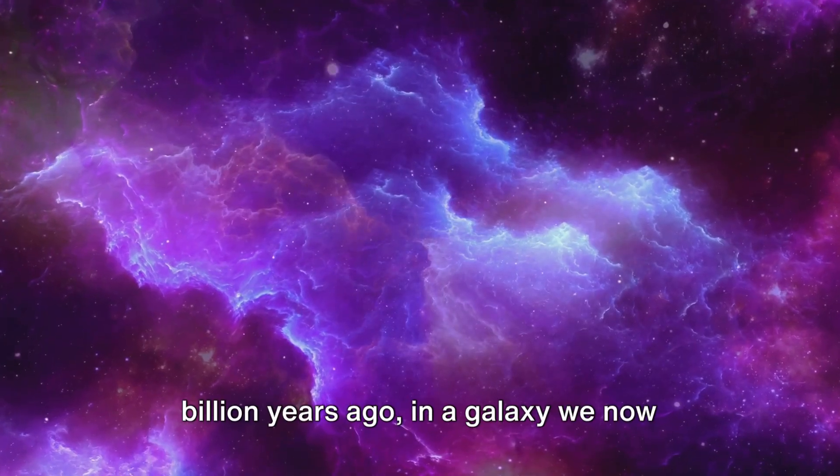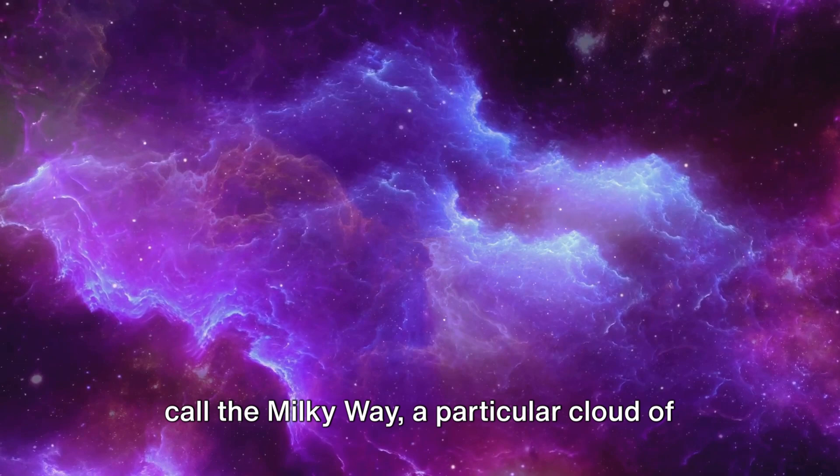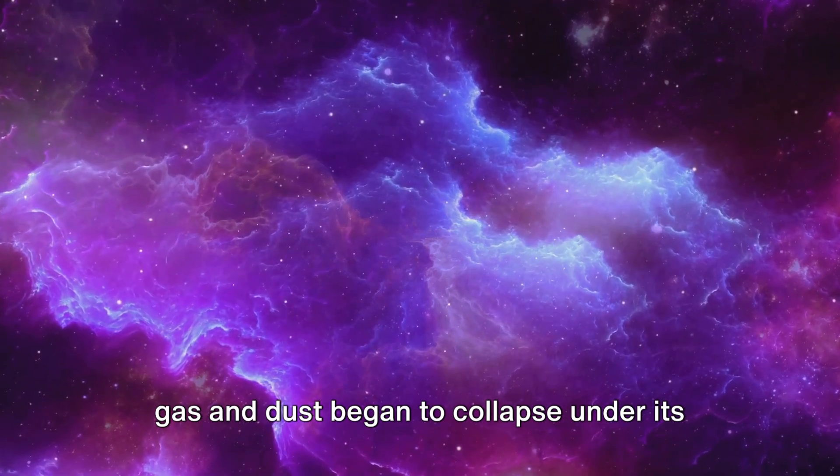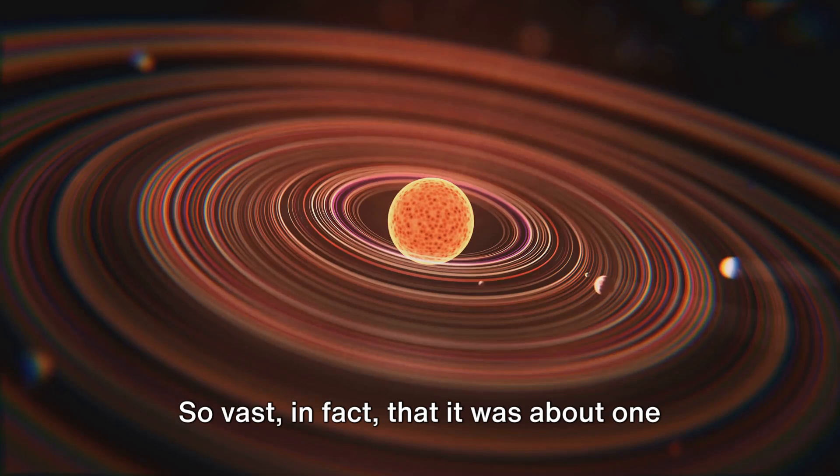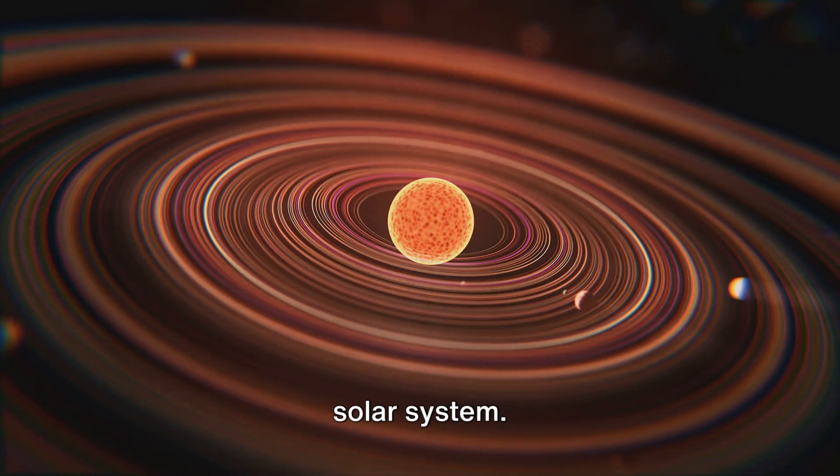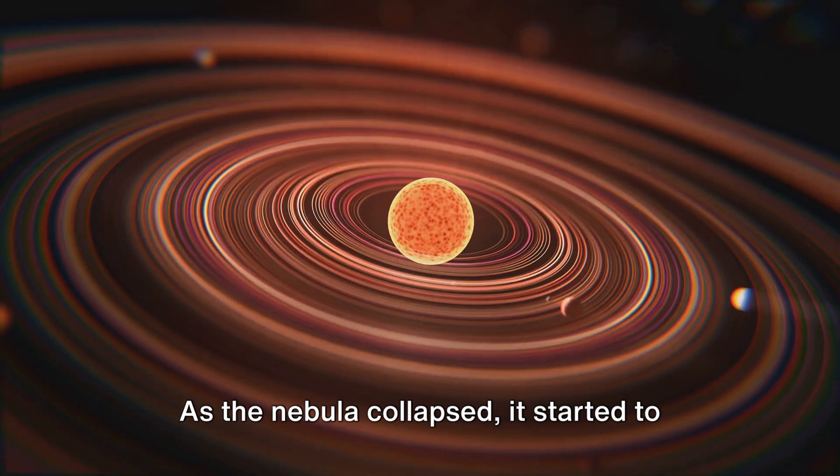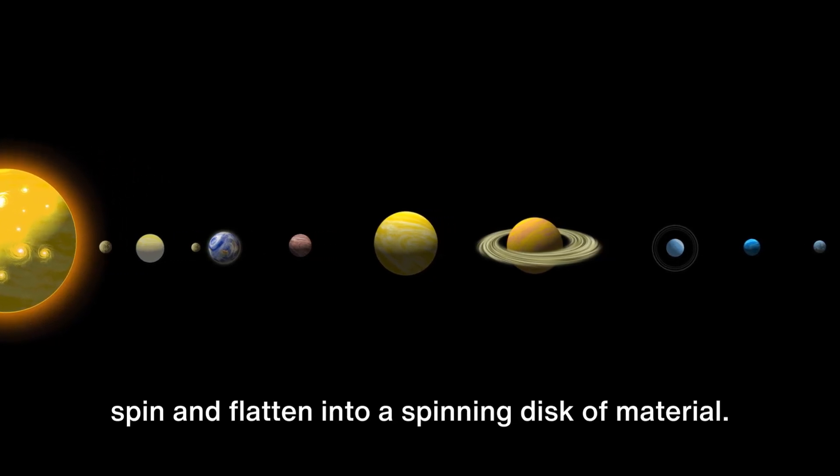About 4.6 billion years ago, in a galaxy we now call the Milky Way, a particular cloud of gas and dust began to collapse under its own gravity. This celestial cloud, known as a nebula, was vast. So vast, in fact, that it was about 100 times the size of our current solar system. As the nebula collapsed, it started to spin and flatten into a spinning disk of material. Picture a cosmic pizza dough twirling and stretching in the hands of the universe.